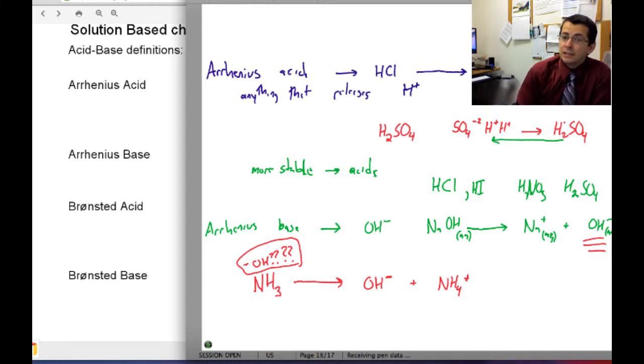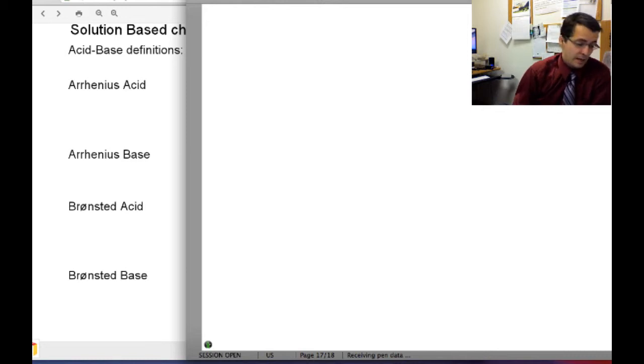But yet it still is able to release hydroxide. How does it do this? It turns out we can use a different definition of acids and bases, one based on the Bronsted definition. The Bronsted definition is different.